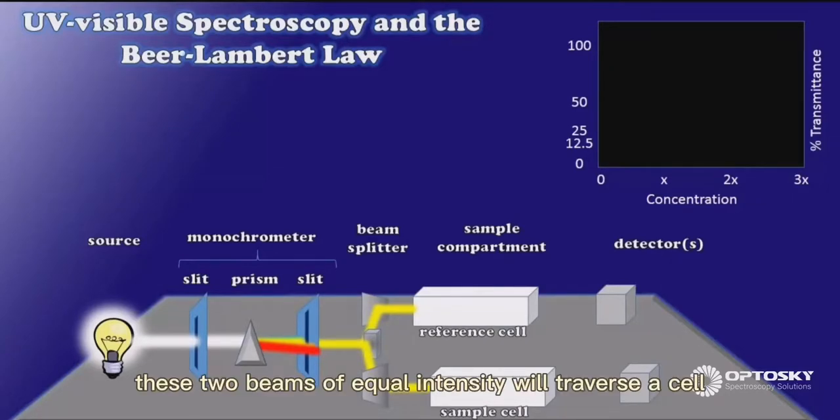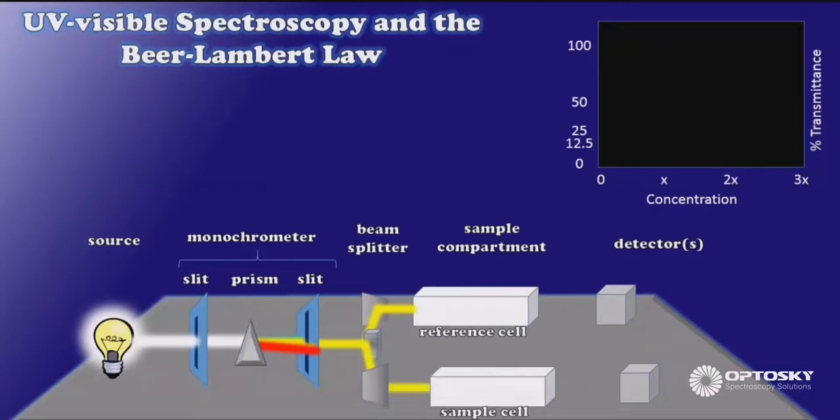These two beams of equal intensity will traverse a cell, a different one for each, one being the reference and one being the sample cell.